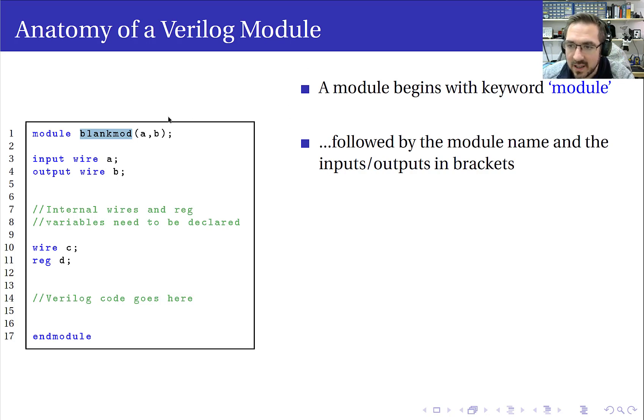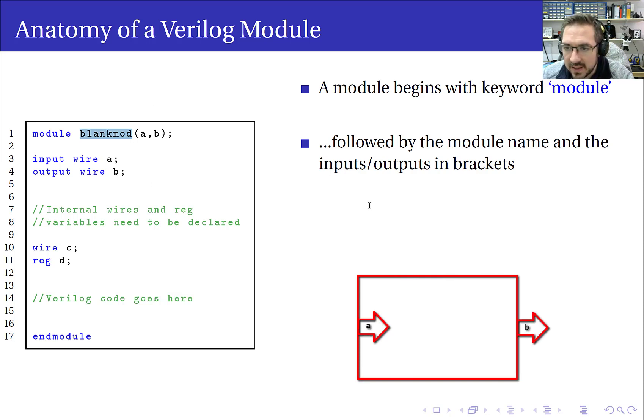In this case, we have A and B. Now, the next thing we get to is these two lines here.